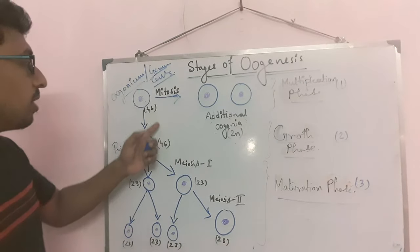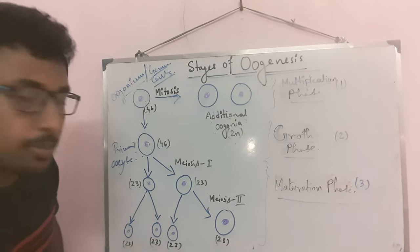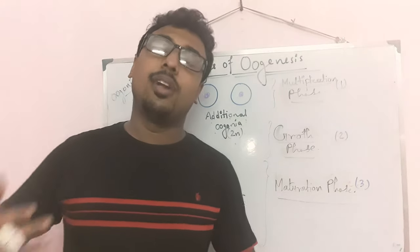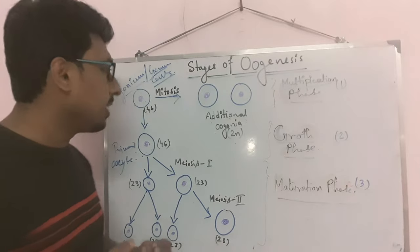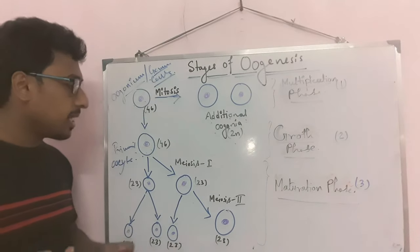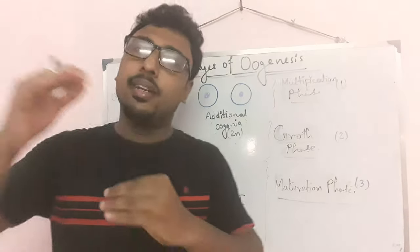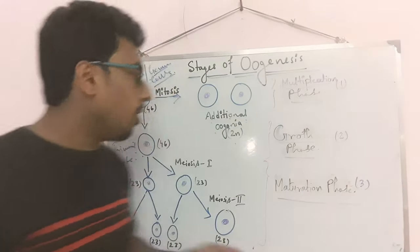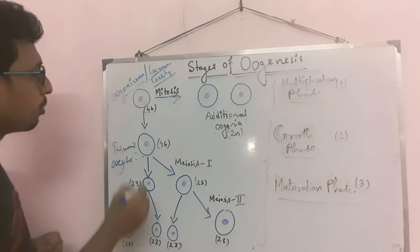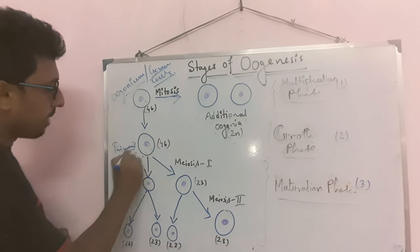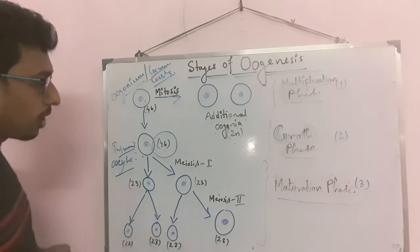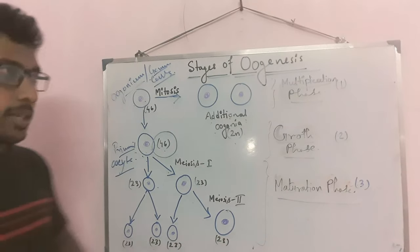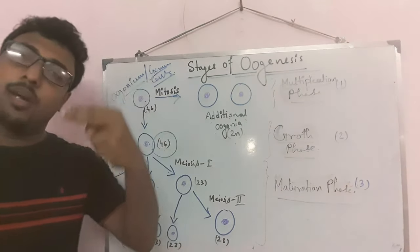In the maturation phase, there is a reduction division in oocyte. The primary oocyte has 46 chromosomes, but in the secondary oocyte there will be 23 chromosomes — the number is reduced. That is why it is known as reduction division due to meiosis. There are two meiosis divisions: meiosis 1 and meiosis 2, with few sub-stages like pachytene and diplotene.